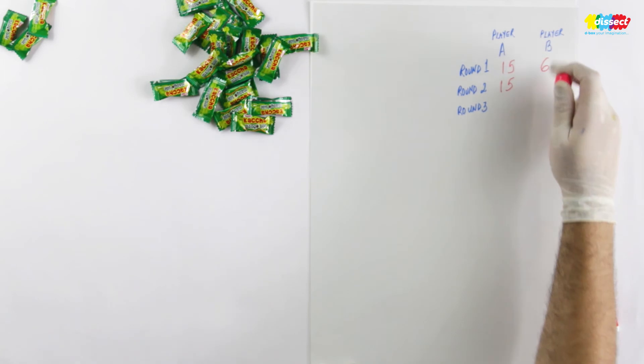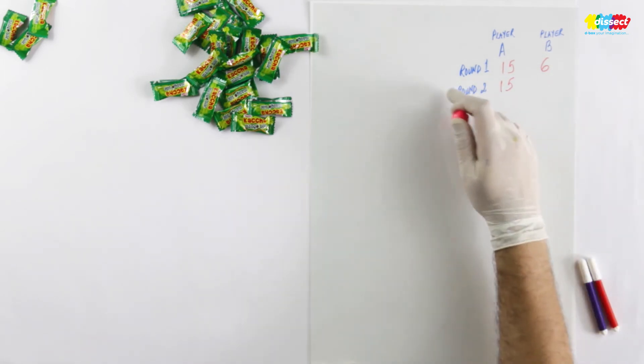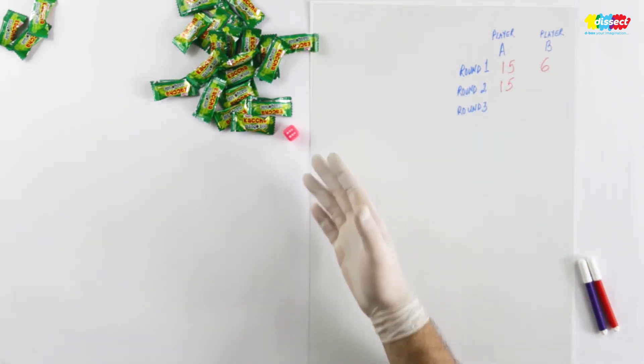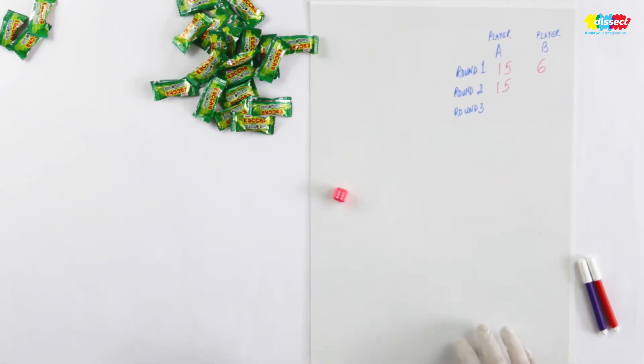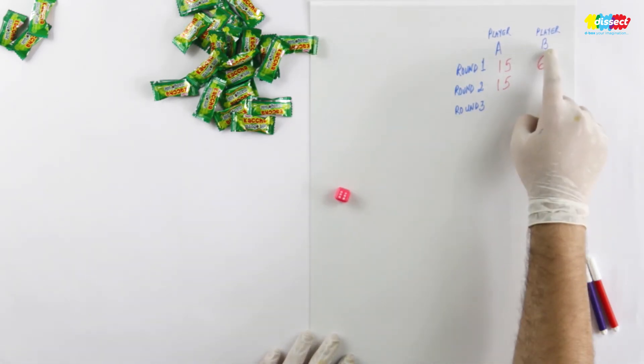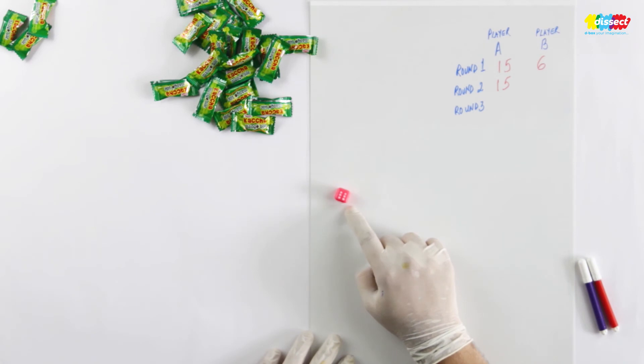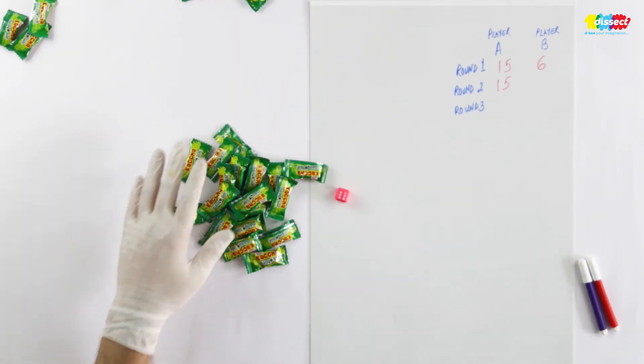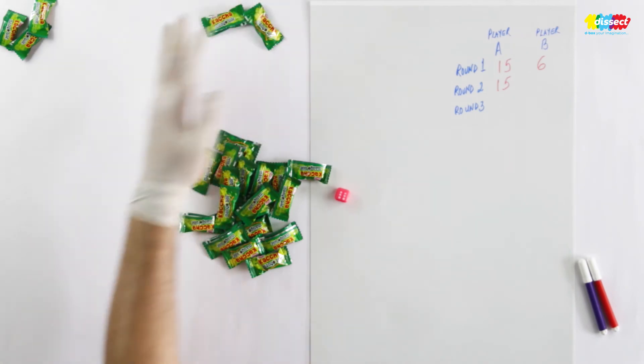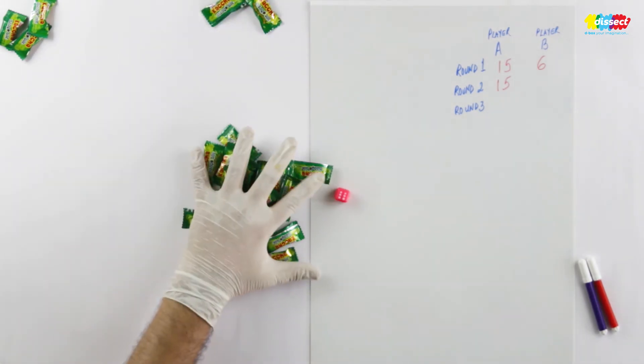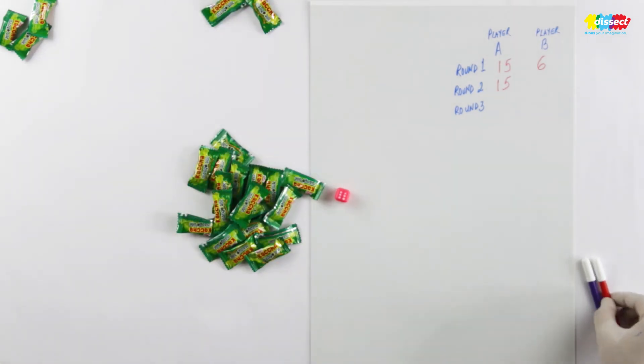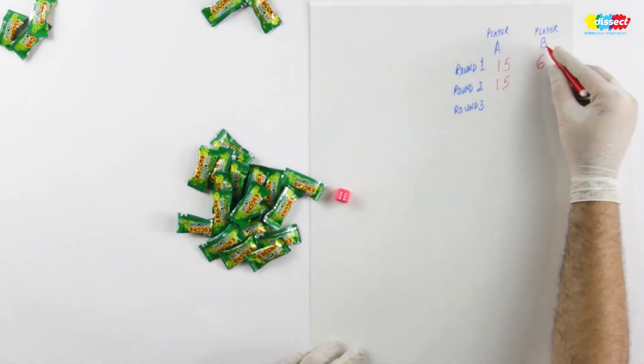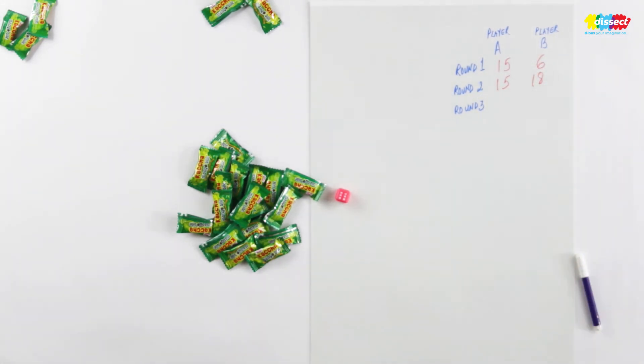We will now play player B round 2. 6. So 6 means player B has won 18 chocolates because each dot on the dice means 3 chocolates. So I have 18 chocolates here because I started with 20, I will just remove two. So the score for player B in round 2 is 18.